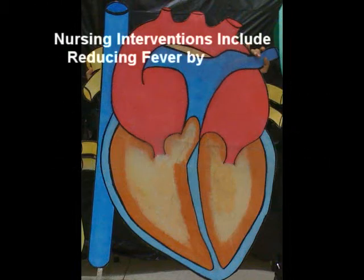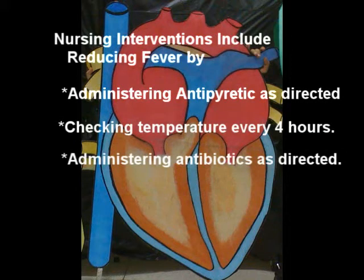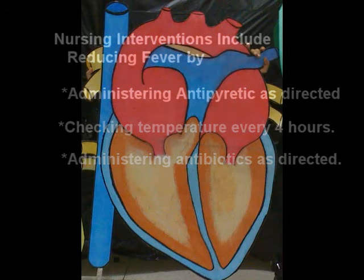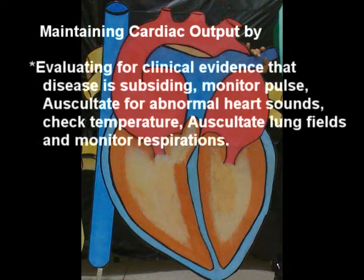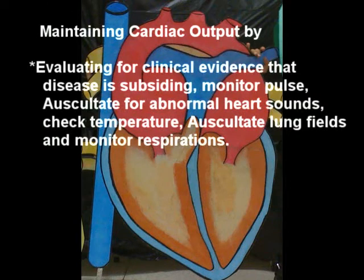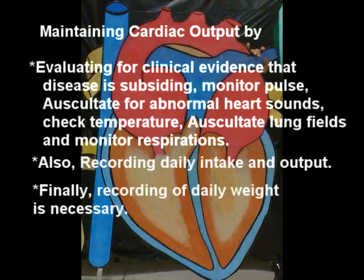Nursing interventions include reducing fever by administering antipyretics as directed, checking temperature every 4 hours, and administering antibiotics as directed. Maintaining cardiac output by evaluating for clinical evidence the disease is subsiding — monitor pulse, auscultate for abnormal heart sounds, check temperature, auscultate lung fields, and monitor respirations. Also record daily intake and output, and record daily weight.